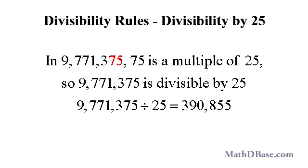If a whole number ends in 00 or in two digits that form a multiple of 25, then the number is divisible by 25. For example, 9,771,375 ends in 75, which is a multiple of 25, so 9,771,375 is a multiple of 25, and 9,771,375 divided by 25 equals 390,855.